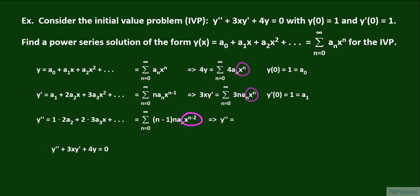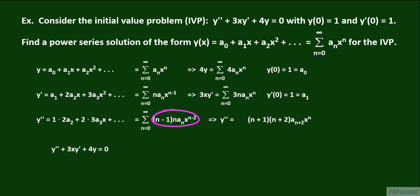For y double prime, we re-index by increasing the exponent from x to the n minus 2 power to x to the nth power, changing a sub n to a sub n plus 2, n to n plus 2, and n minus 1 to n plus 1. We simply increase the index values from n to n plus 2. Fortunately, no adjustment to the summation limits is necessary — letting n start at 0 and go to infinity still works.